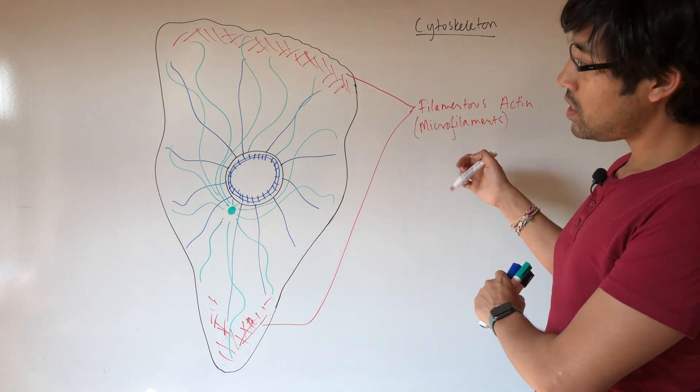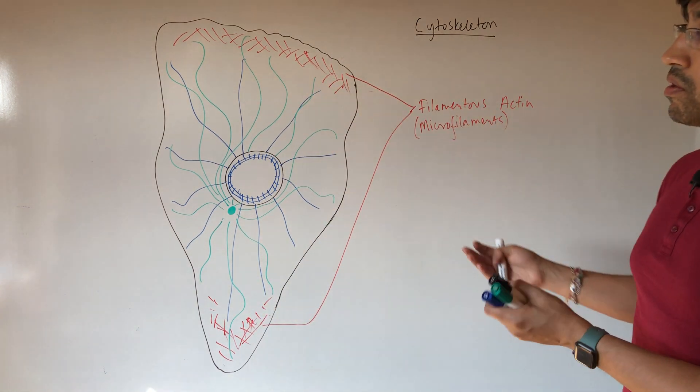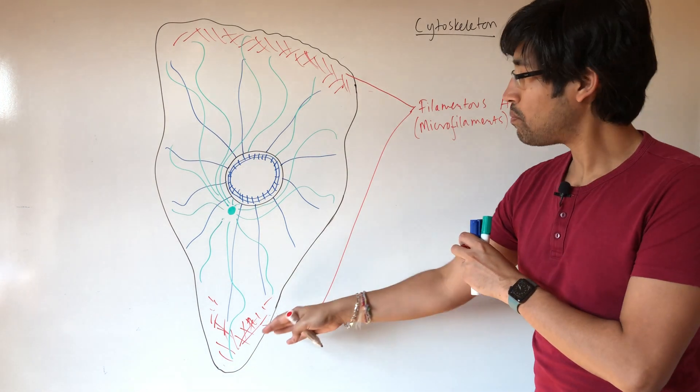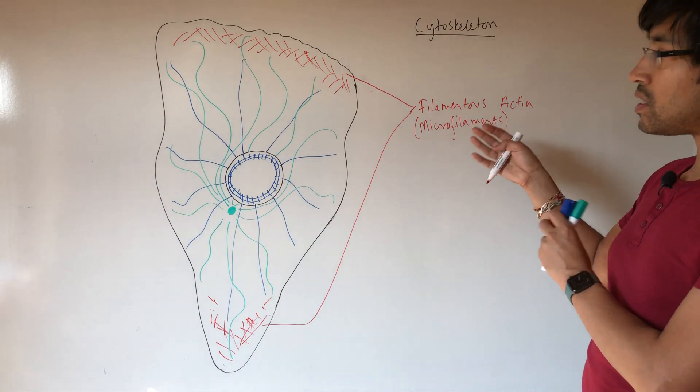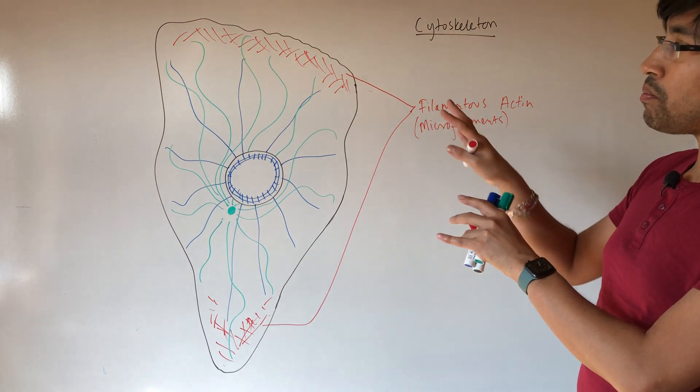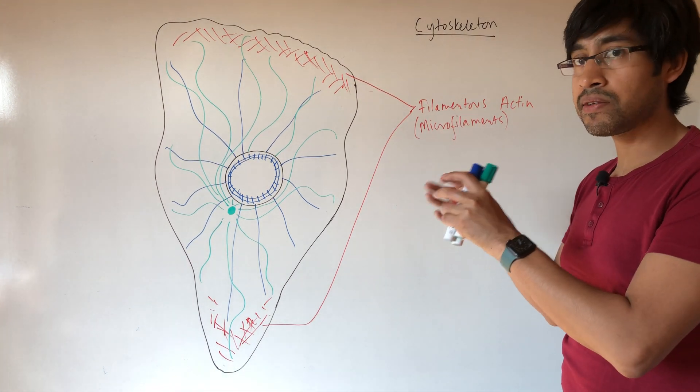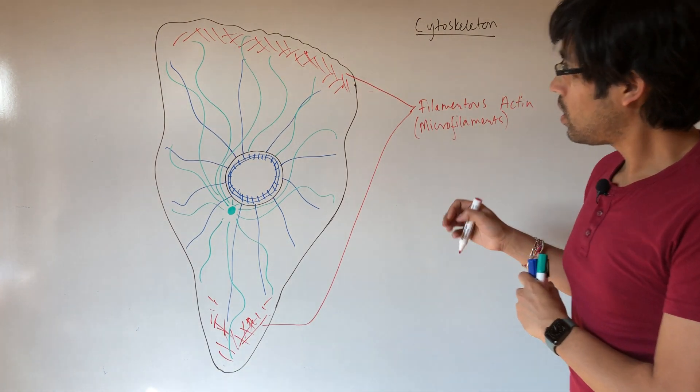And you usually find these near the periphery of the cell because one of the main roles of actin is to push or pull on the cell membrane in order to generate cell shape changes.